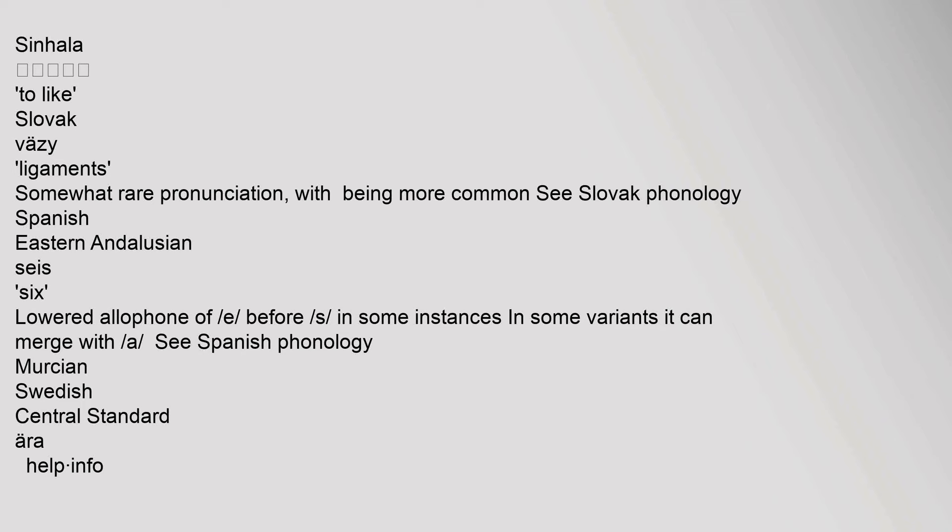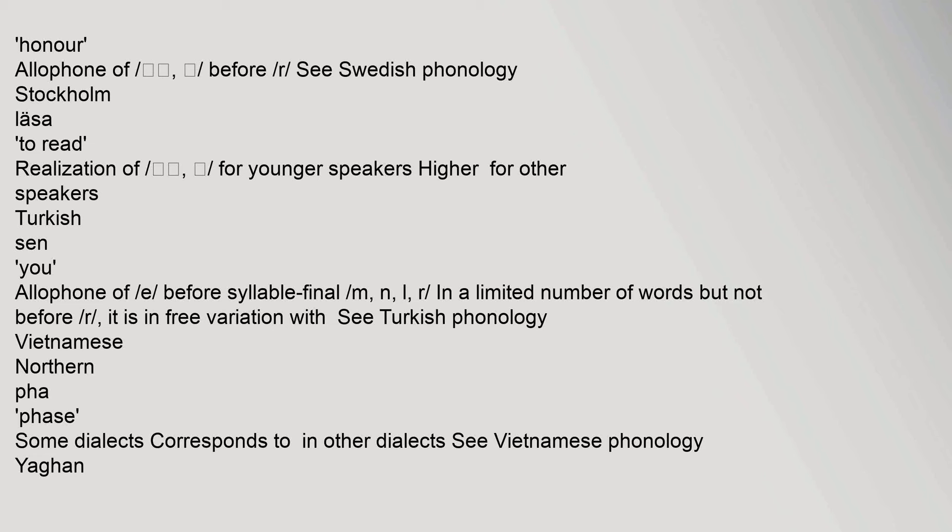Sinhala. Slovak: 'väzy' (ligaments) — somewhat rare pronunciation, with /ɛ/ being more common; see Slovak phonology. Spanish Eastern Andalusian: lowered allophone of /e/ before /s/ in some instances; in some variants it can merge with /a/; see Spanish phonology. Swedish: central standard — 'ära' (honor) — allophone of /ɛ/ before /r/; see Swedish phonology. Stockholm: 'läsa' (to read) — realization for younger speakers; higher for other speakers.